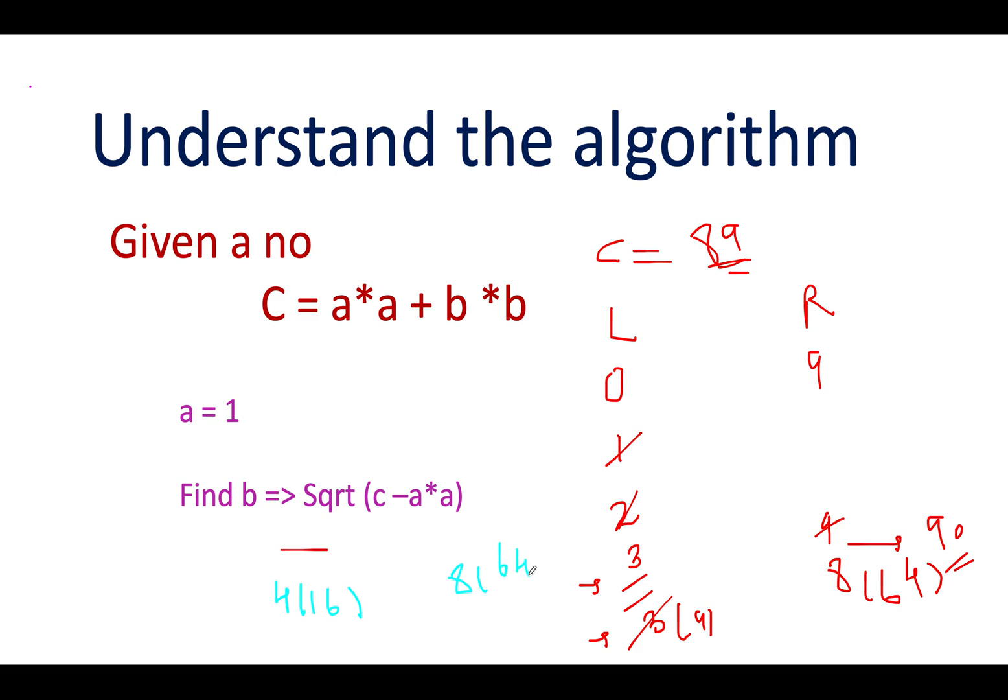80 is again lower than c. You'll increment the value of left. Left gets updated to 5. You have 25 as its square and 8² is again 64. So 64 + 25 is 89.